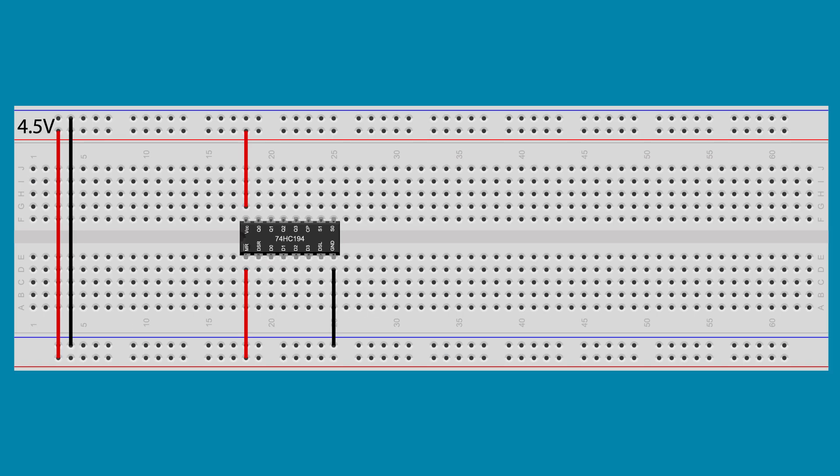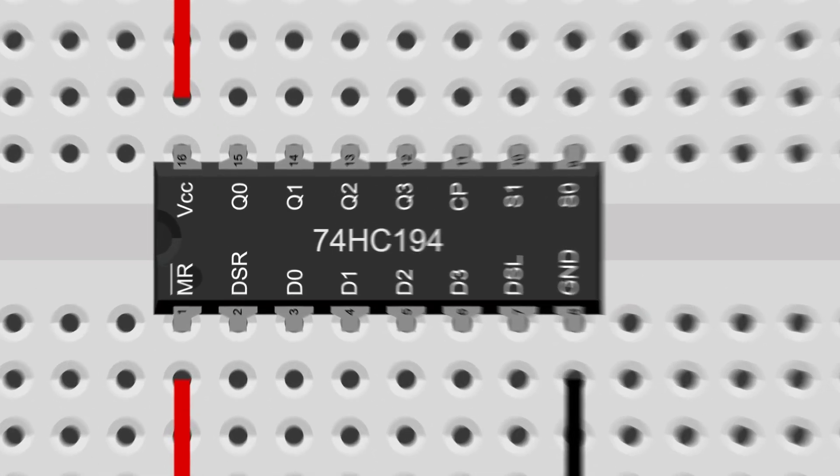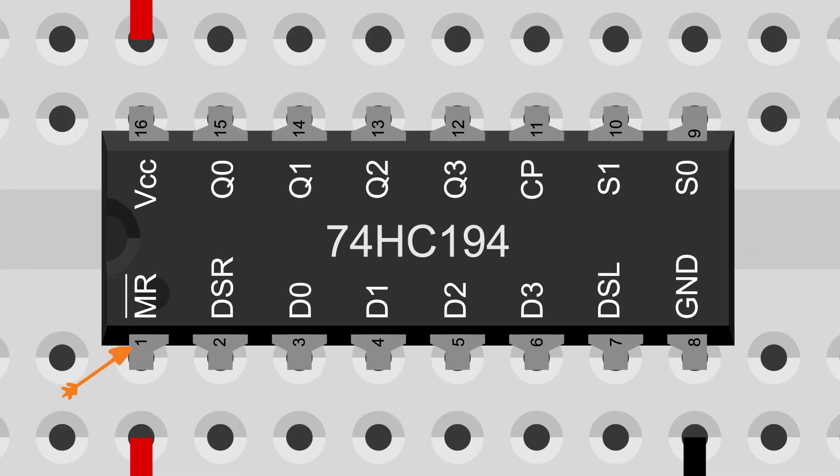To start, we connect pin 16 to VCC and pin 8 to ground. Pin 1 is the master reset, which is active low, so it gets connected to VCC to keep it inactive. Pin 11, CP, is where the clock pulse will go in.